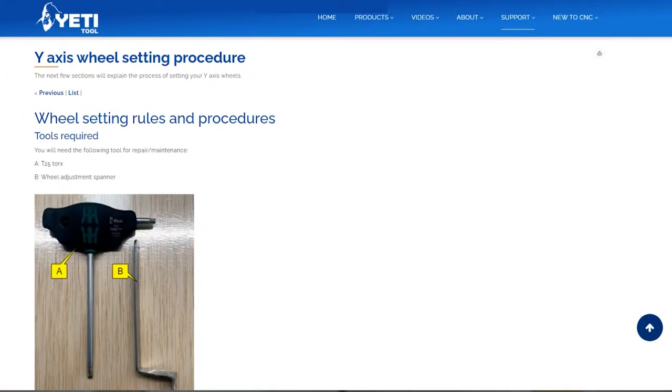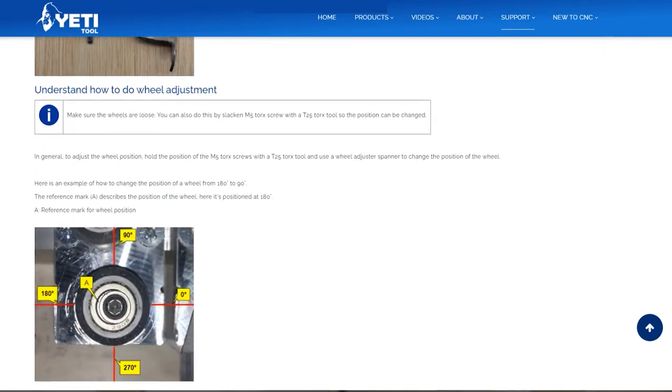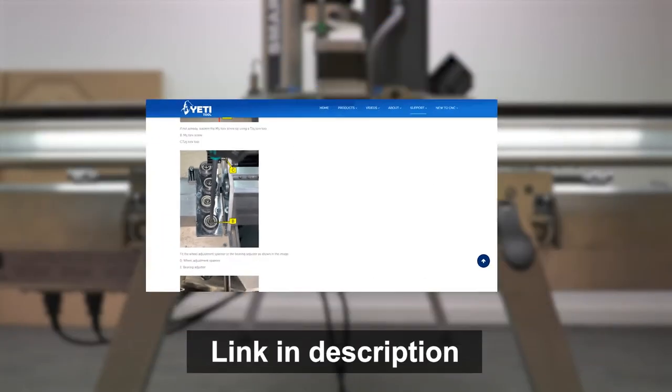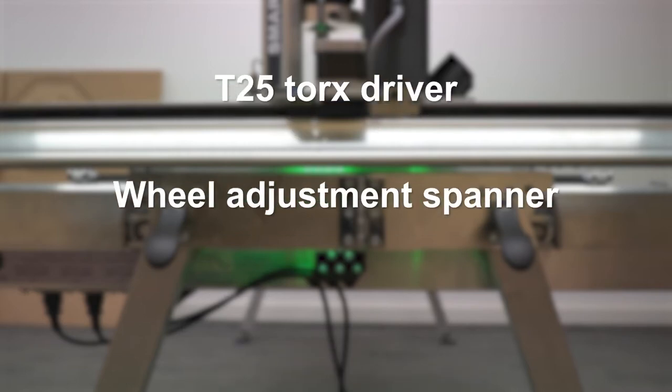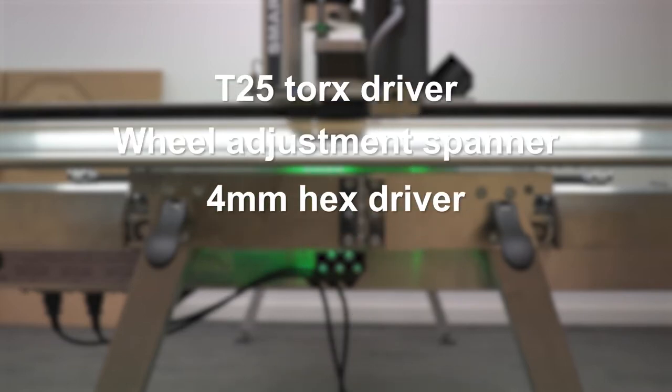This video is in support of our wheel setting knowledge base article found on our website. To set your y-axis wheels you will need a T25 Torx driver, a wheel adjustment spanner, a 4mm hex driver, and a 10mm spanner.